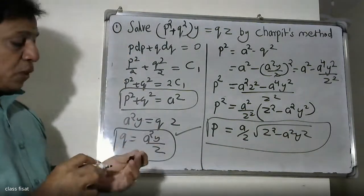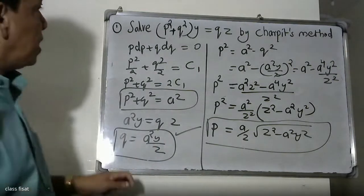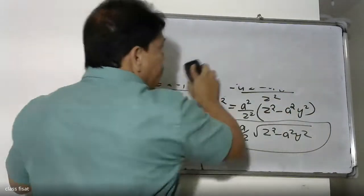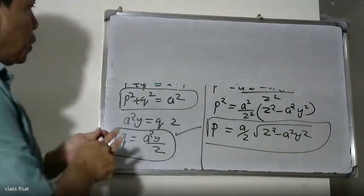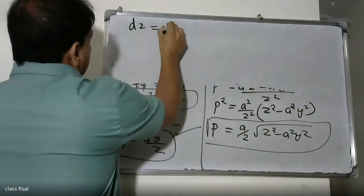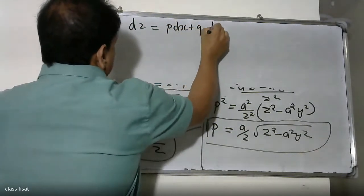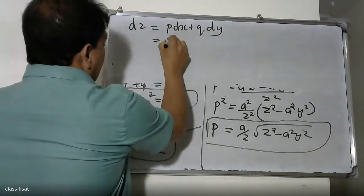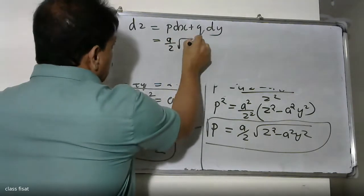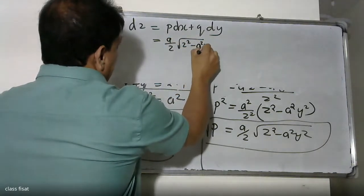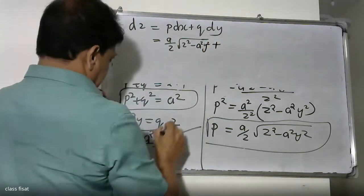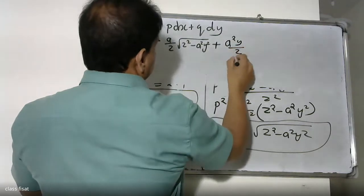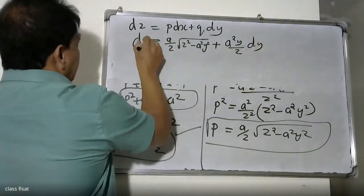Now P and Q are determined. We substitute into the total differential: dz equals P dx plus Q dy. We substitute P as A divided by Z times the root of S squared minus S squared theta by S squared, and similarly for Q with S squared y divided by Z.